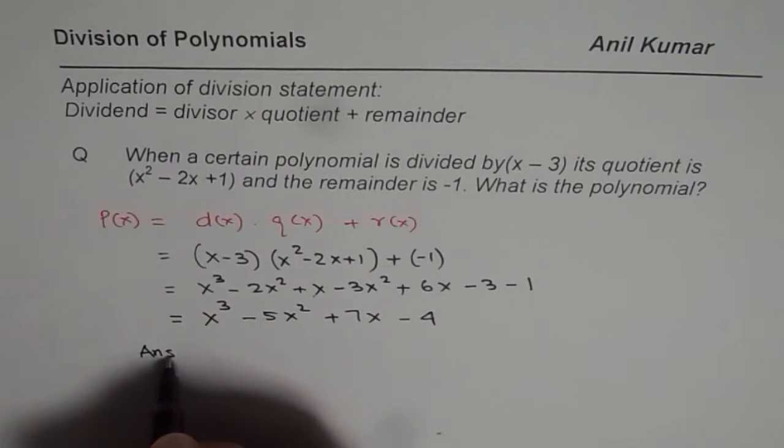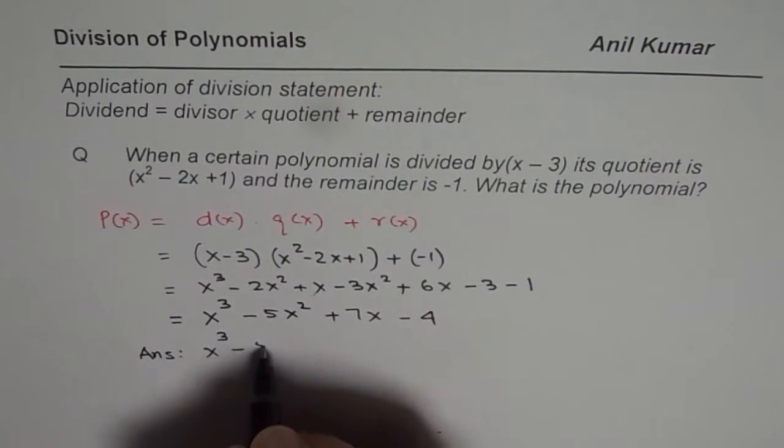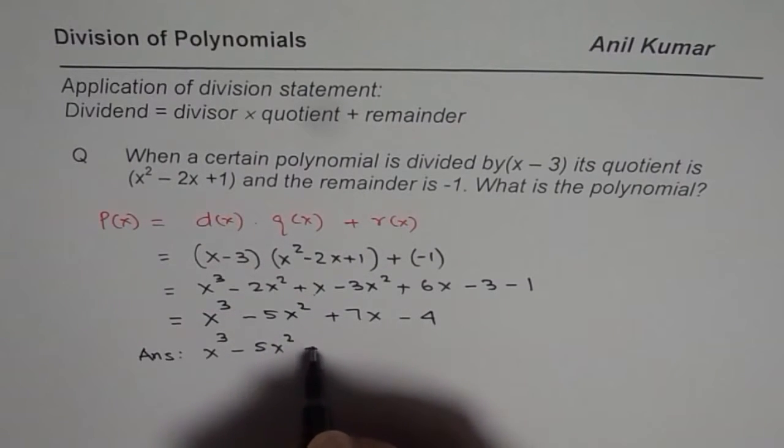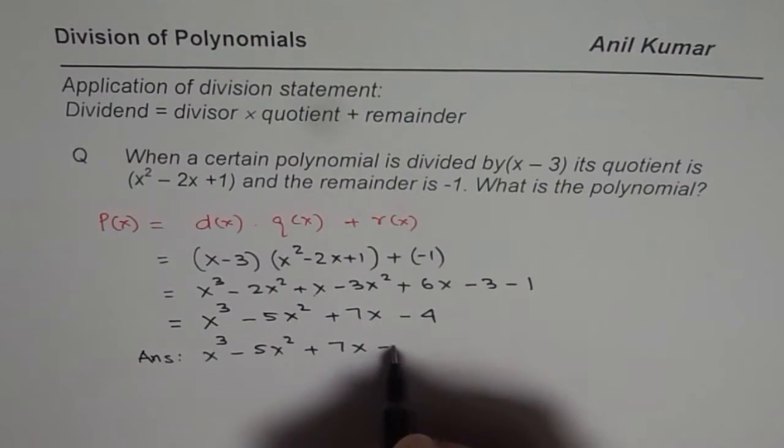So we get our answer, and that is x cubed minus 5x squared plus 7x minus 4.